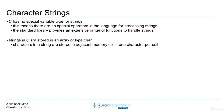Strings in C are stored in an array of type char. We know what an array is and we know what a type char is — a type char is a single character. An array lets you store multiple elements under the same name. So it makes sense that a string would be inside of a character array because a string is many characters. Characters of a string are stored in adjacent memory cells, one character per cell, and you can access it just like you access an array.